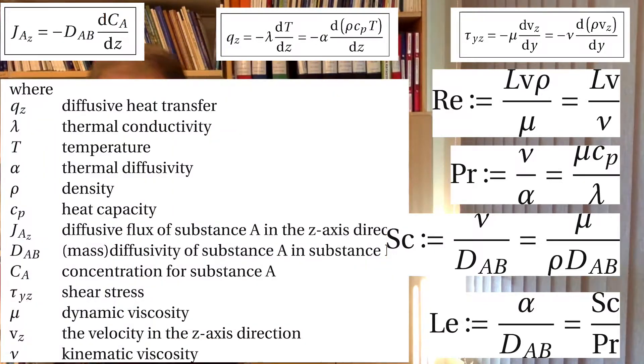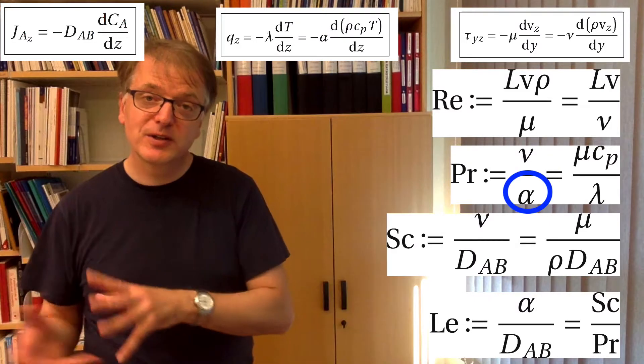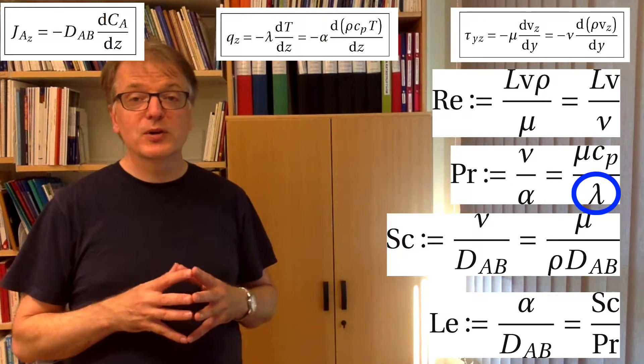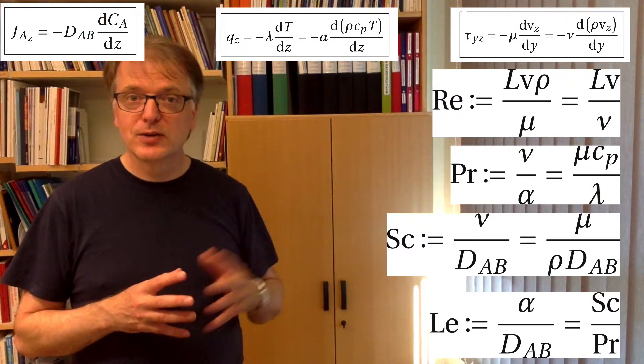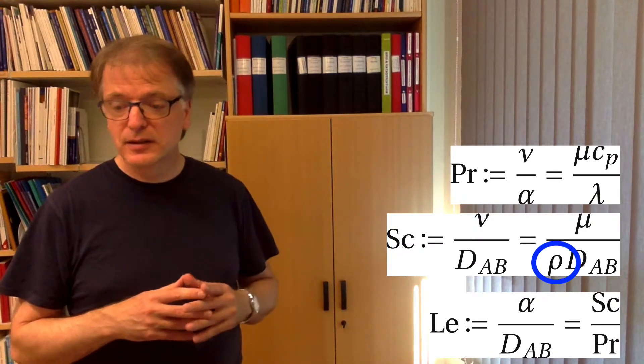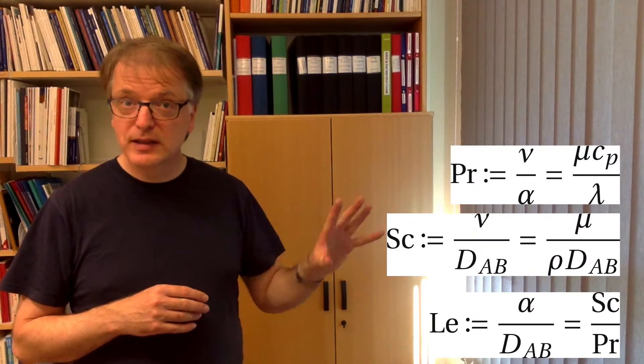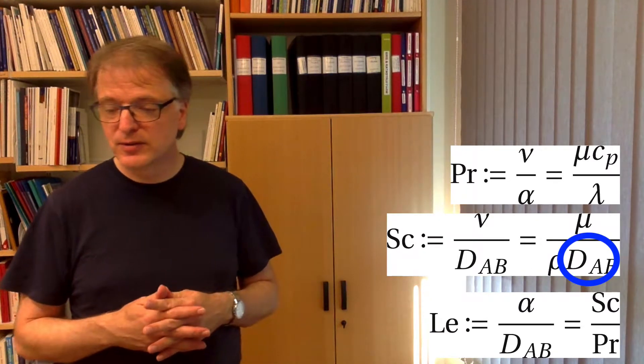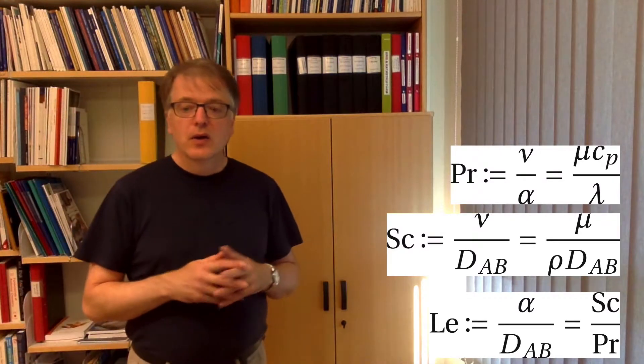So what do we have here? We have the kinematic viscosity, we have the thermal diffusivity, and we can rearrange that as well because the kinematic viscosity can be translated into the dynamic viscosity and the thermal diffusivity can be translated to the thermal conductivity. And then you get this equation here. And in the next you have the density there, the rho and the D_AB, that's the mass diffusivity then, right?